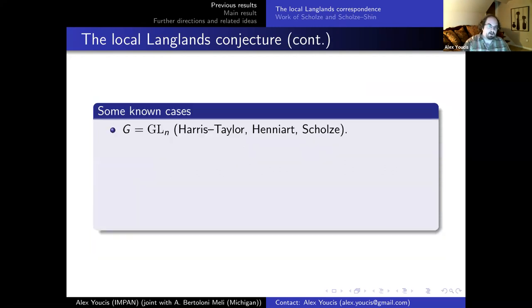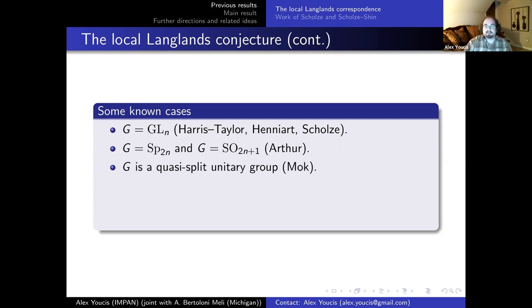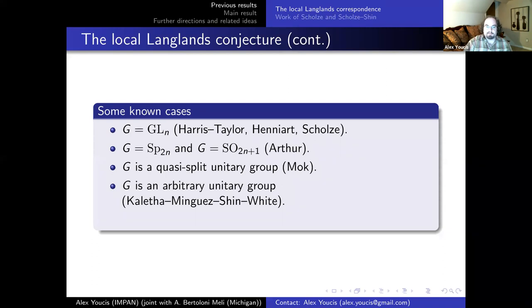Before I continue, I want to give some examples, because this will come up later. Everything I'm talking about is purely in the p-adic situation. The local Langlands correspondence is actually a conjecture in general, but is known in many cases. For GL_N, it was originally done by Harris-Taylor, a simplification was given by Henniart, and Scholze in a 2013 paper gave an alternative view. For Sp_{2N} and SO_{2N+1}, Arthur's work on endoscopy completed the conjecture. Mok handled quasi-split unitary groups, and Kaletha-Minguez-Shin-White handled arbitrary unitary groups. For GSp_4, the work of Gan and Takeda takes care of the conjecture.